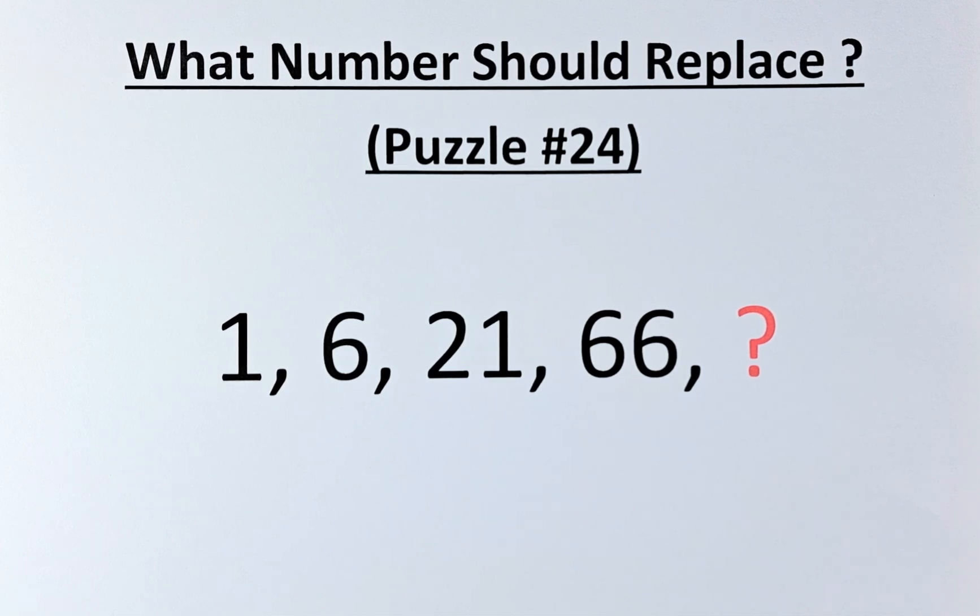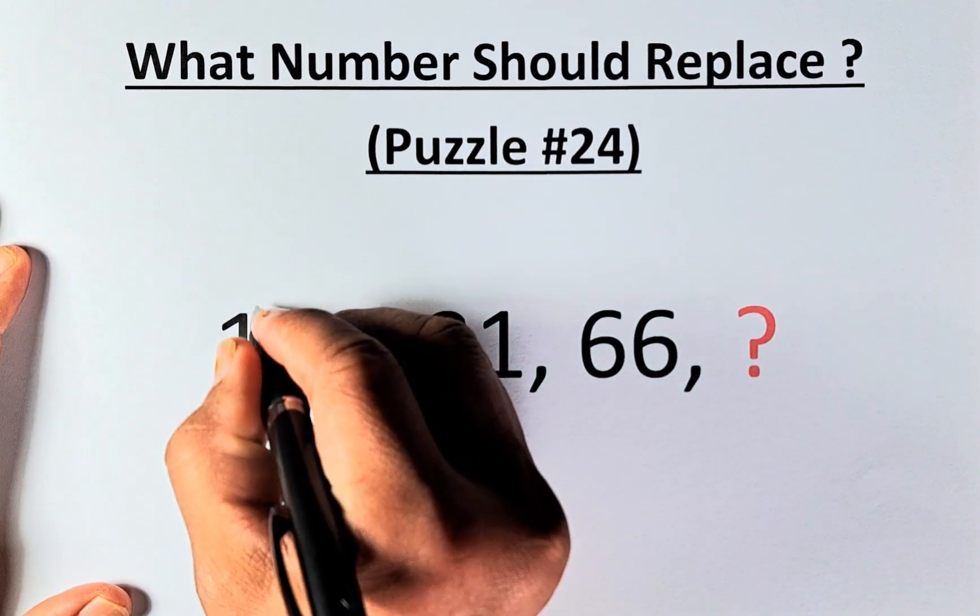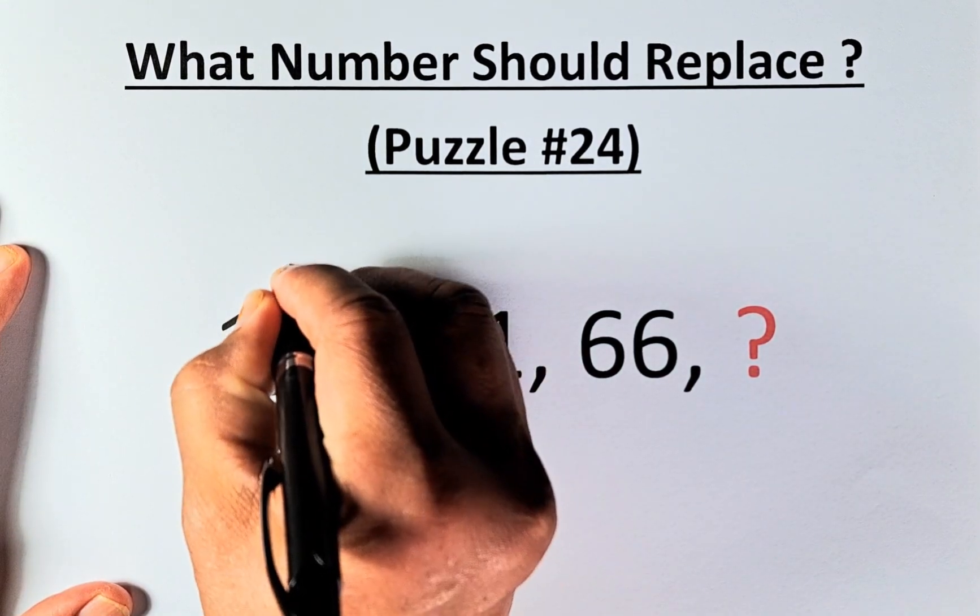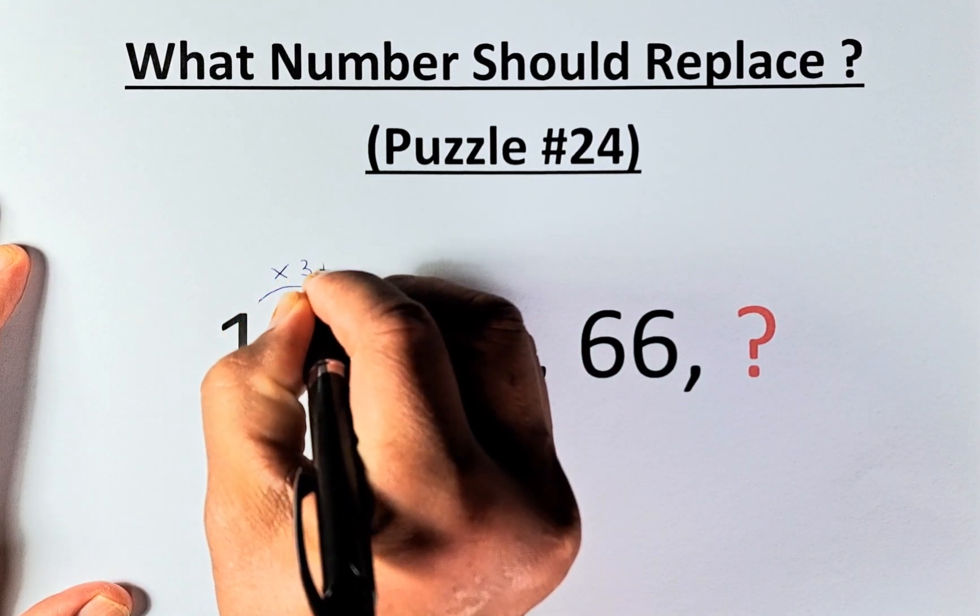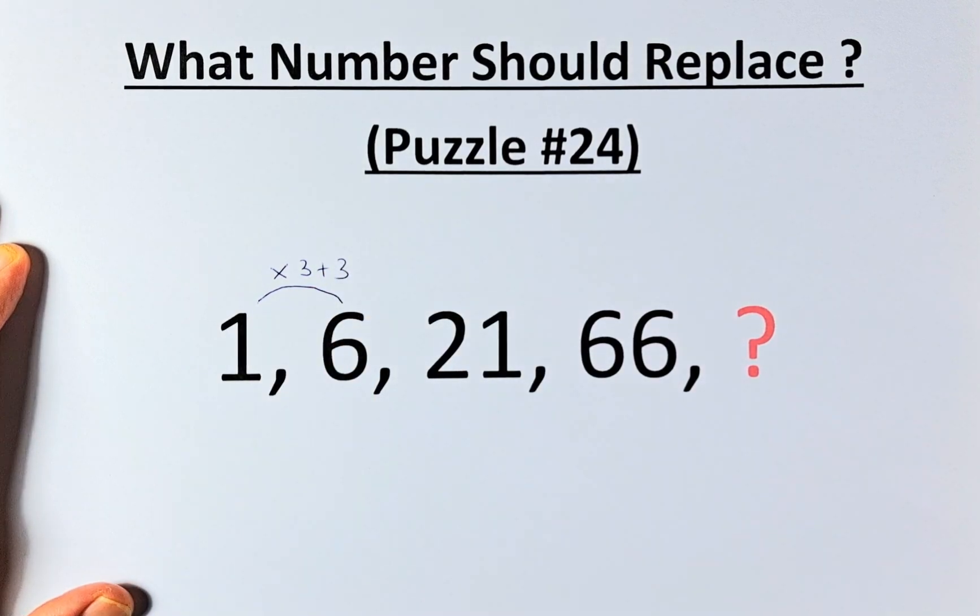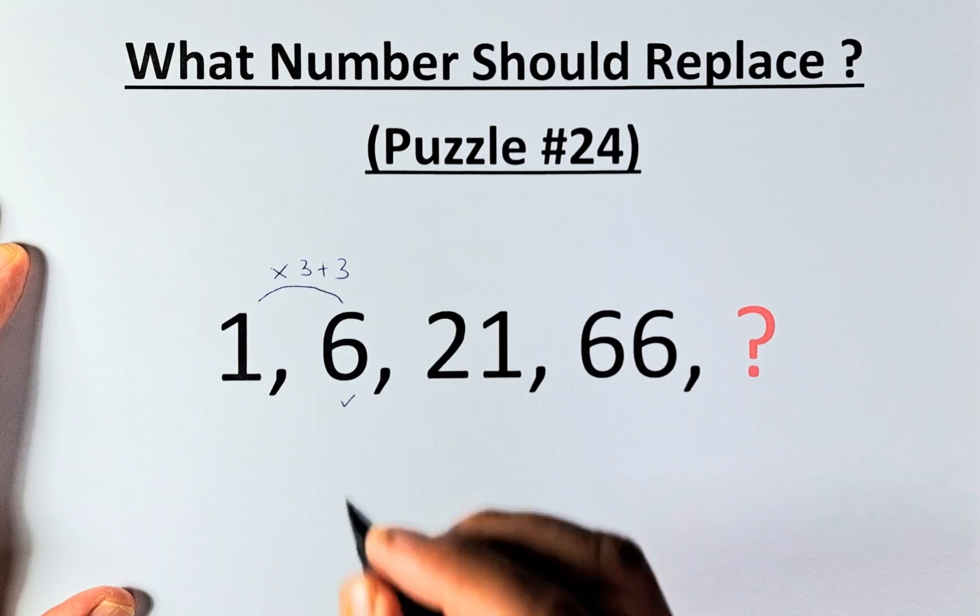From 1 to 6, we are going to multiply by 3 and add 3. 1 times 3 is 3, 3 plus 3 gives us 6.